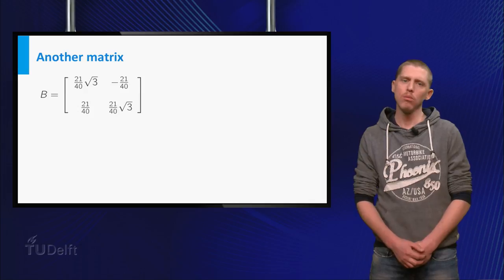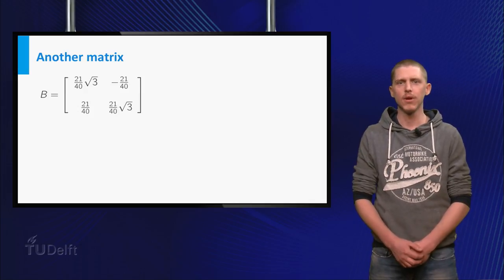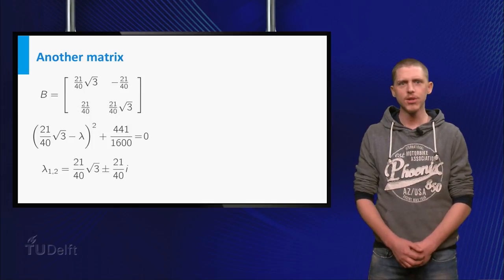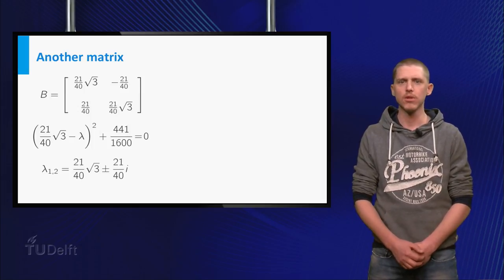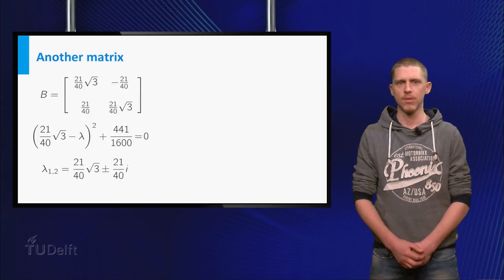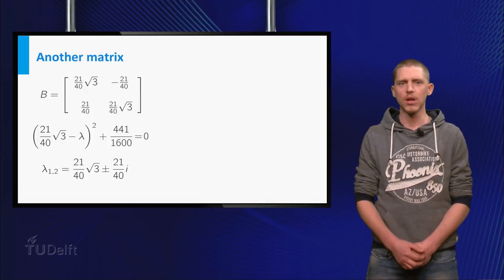Now let us try to find all possibly complex eigenvalues of the matrix B. The characteristic equation gives the two complex eigenvalues lambda 1 and lambda 2. So again you have found complex eigenvalues.